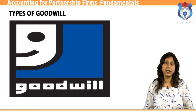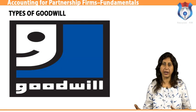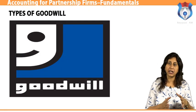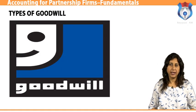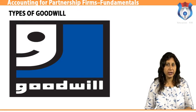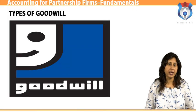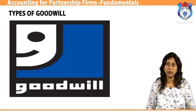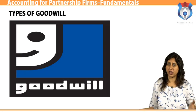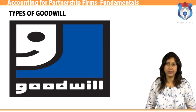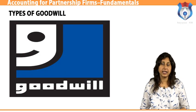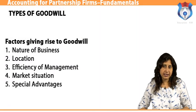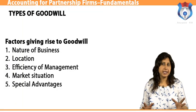Any firm that earns normal profits or is incurring losses has no goodwill. Types of goodwill: goodwill is generally of two types — purchased goodwill and non-purchased (raised) goodwill. Purchased goodwill arises only when a business enterprise is acquired by another and the price paid is more than the net assets acquired; it is recognized by the accounting profession and shown in the balance sheet. Non-purchased or raised goodwill arises when a business generates its own goodwill over time due to factors such as location, good management, and good quality products — it is internally generated and no cost can be placed on it. Factors giving rise to goodwill include: nature of business, location, efficiency of management, market situation, and special advantages.